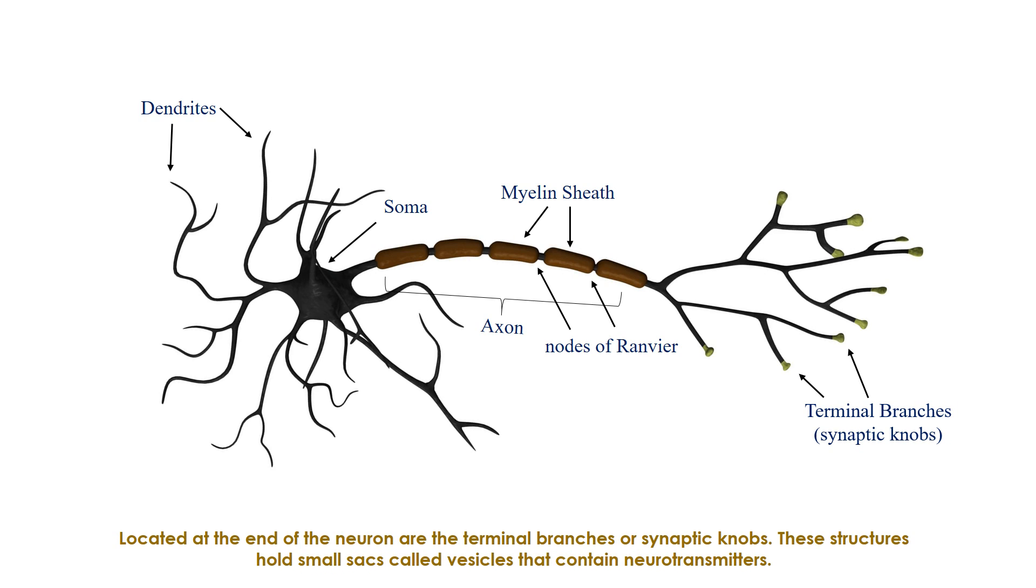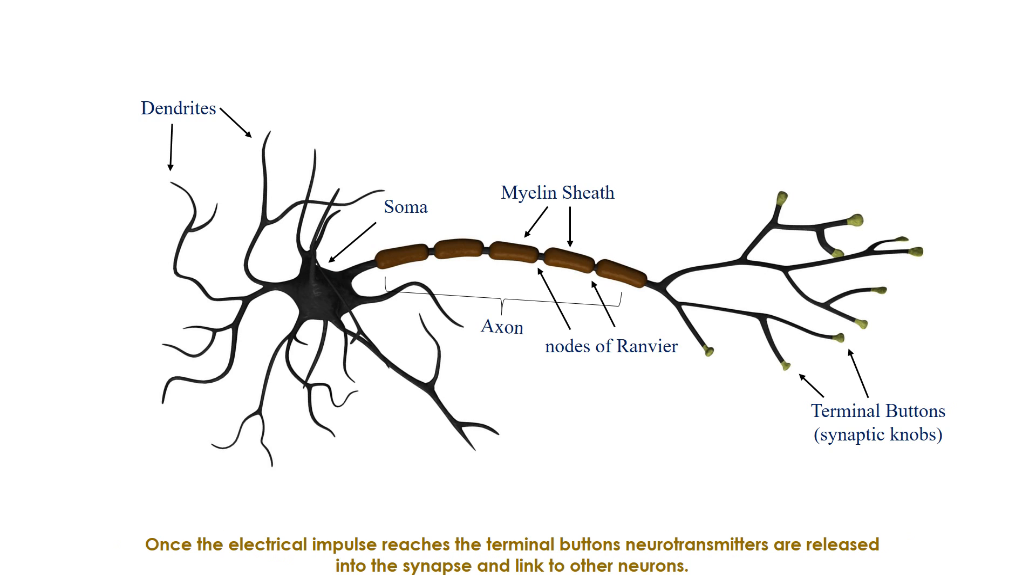Located at the end of the neuron are the terminal branches, or synaptic knobs. These structures hold small sacs called vesicles that contain neurotransmitters. Once the electrical impulse reaches the terminal buttons, neurotransmitters are released into the synapse and linked to other neurons.